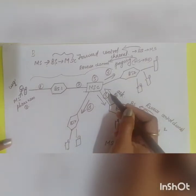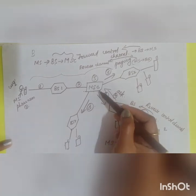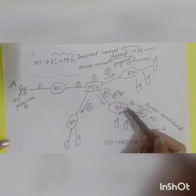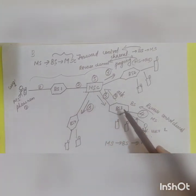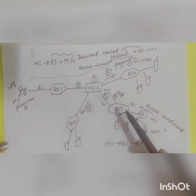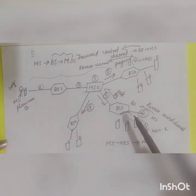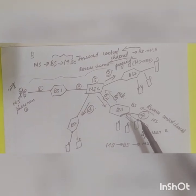Once the MSC receives the acknowledgement, it checks for a free voice channel, allocates it, and the call is established — a process also called handshaking. This completes the transmission and reception process in cellular technology.